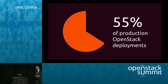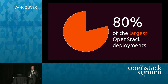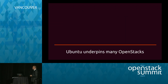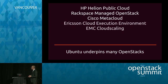The latest user survey is out. 54% of production OpenStack deployments are on Ubuntu — more production deployments than all other platforms put together. If we look at the largest OpenStack deployments, 80% of those are on Ubuntu. This is really our privilege to work with the guys who aspire to scale their clouds, because scale is where the real tests are. We support many different versions of OpenStack — we're not trying to lock down Ubuntu. We've added relationships with Ericsson for their cloud execution environment and EMC around cloud scaling.